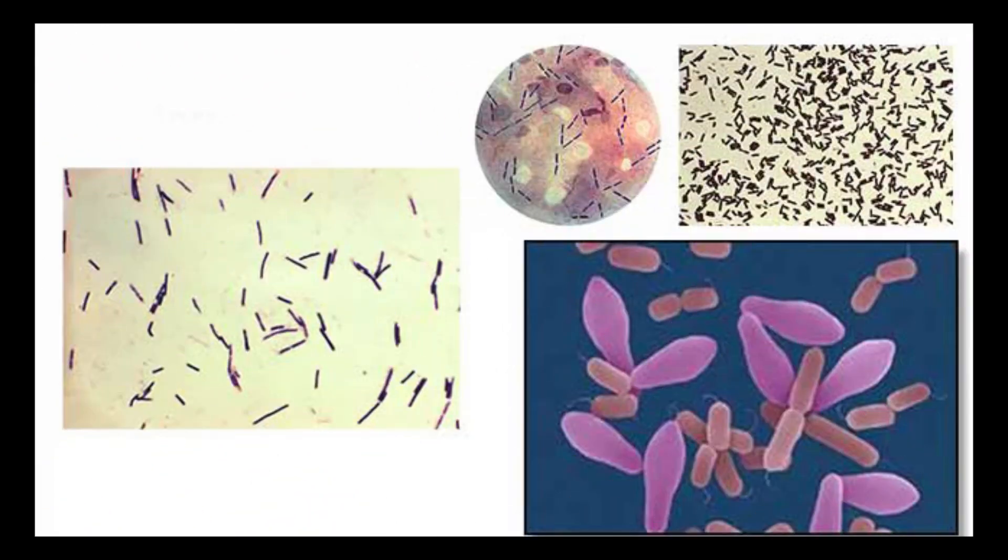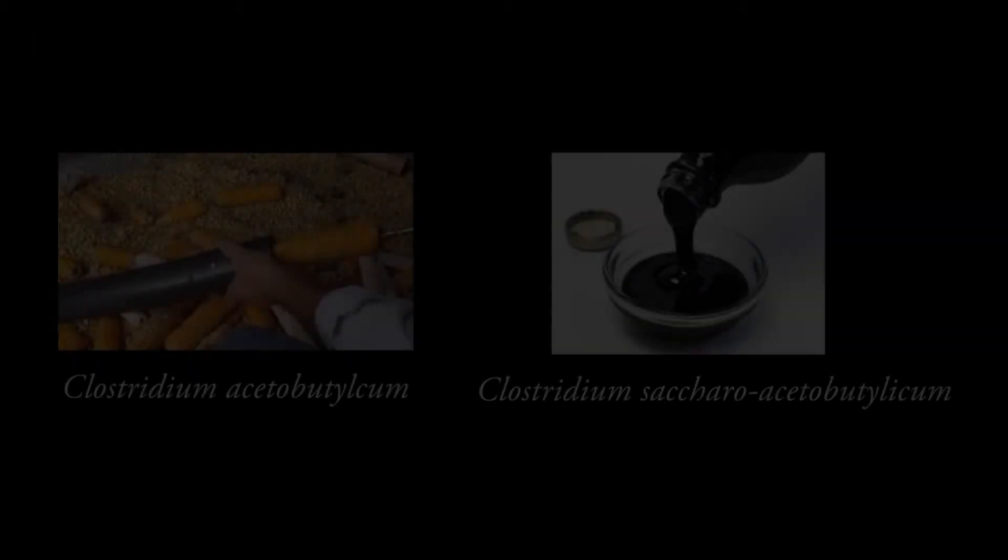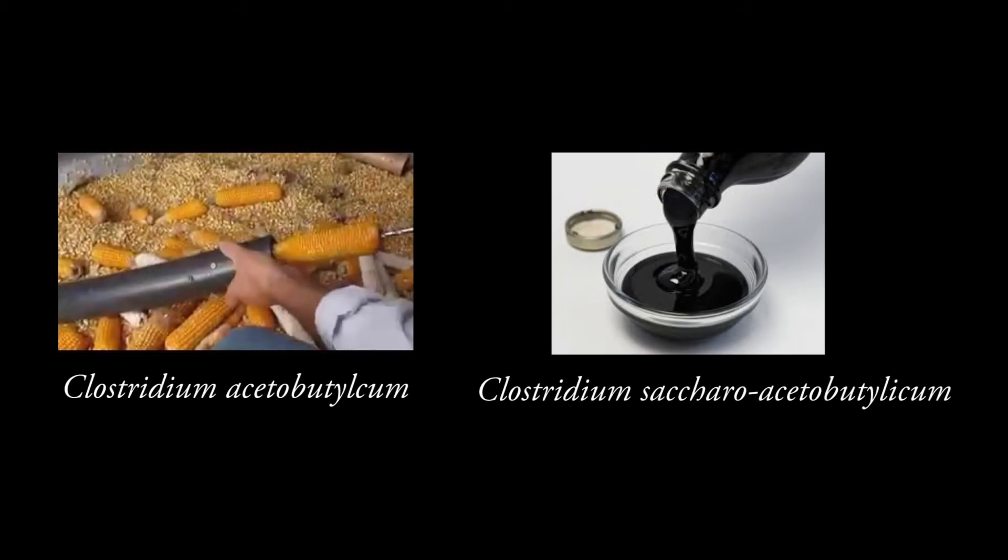Clostridium species are gram-positive, anaerobic, spore-forming bacilli. Certain strains of Clostridium species produce acetone and butanol. Clostridium acetobutylicum uses corn as substrate, whereas Clostridium saccharoacetobutylicum uses molasses as substrate to produce acetone and butanol. But Clostridium acetobutylicum is used as a commercial strain because it gives high yields of these two solvents.